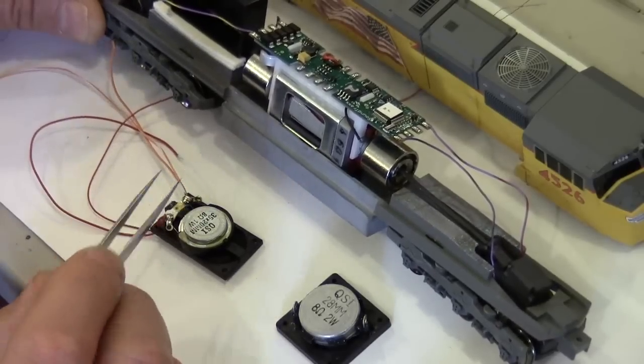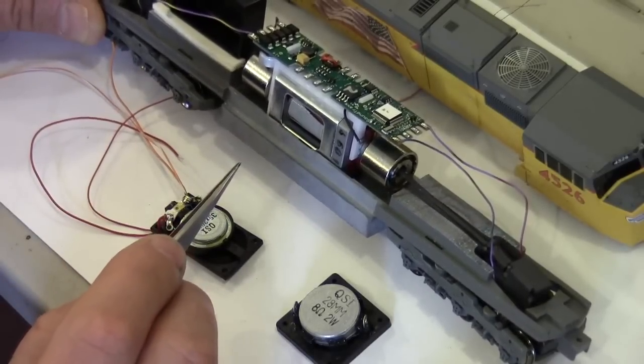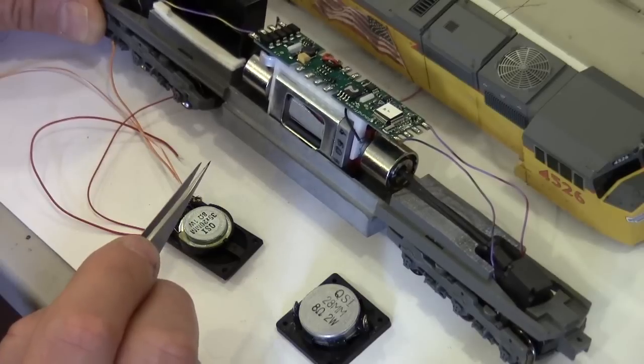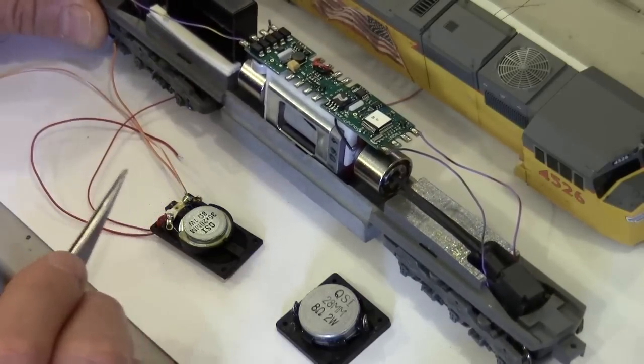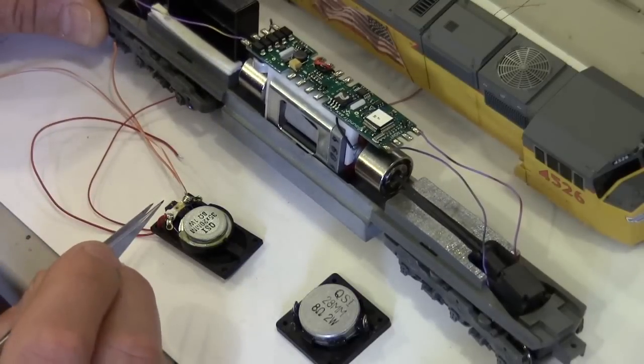Once I've finished with the electrical installation, which includes the lights, speakers, and decoders, and am ready to reassemble the model, I will add back lead weight.